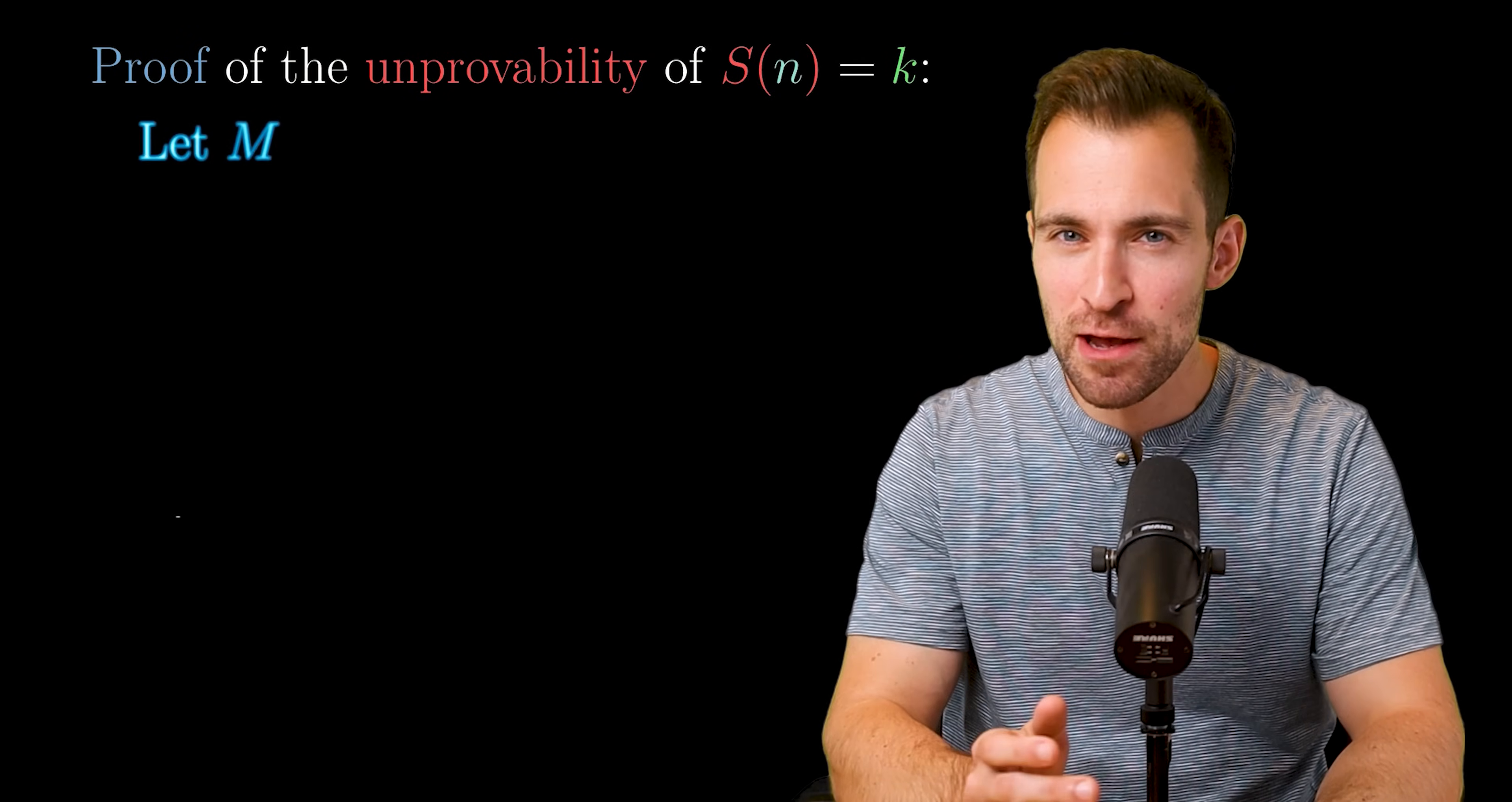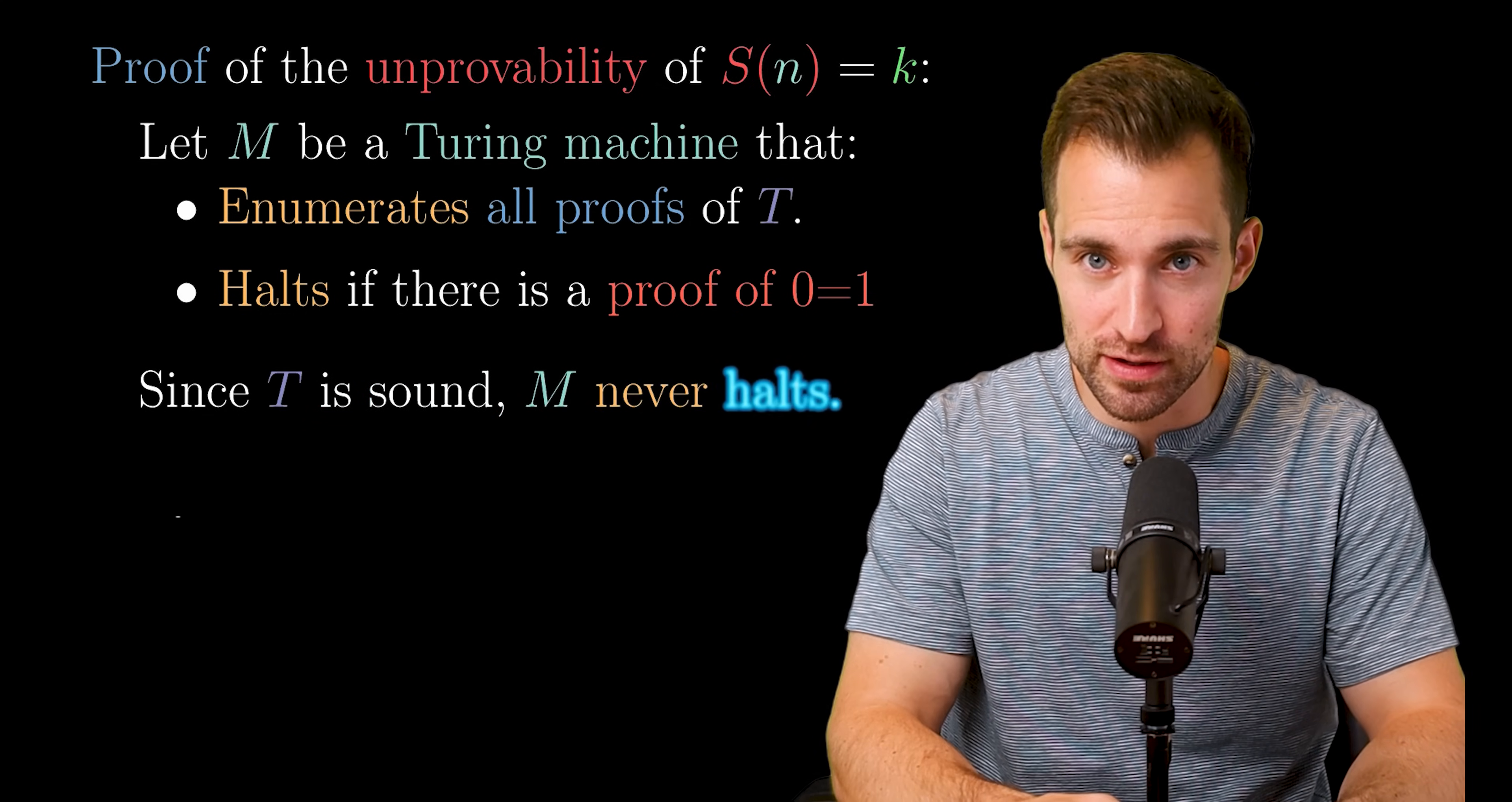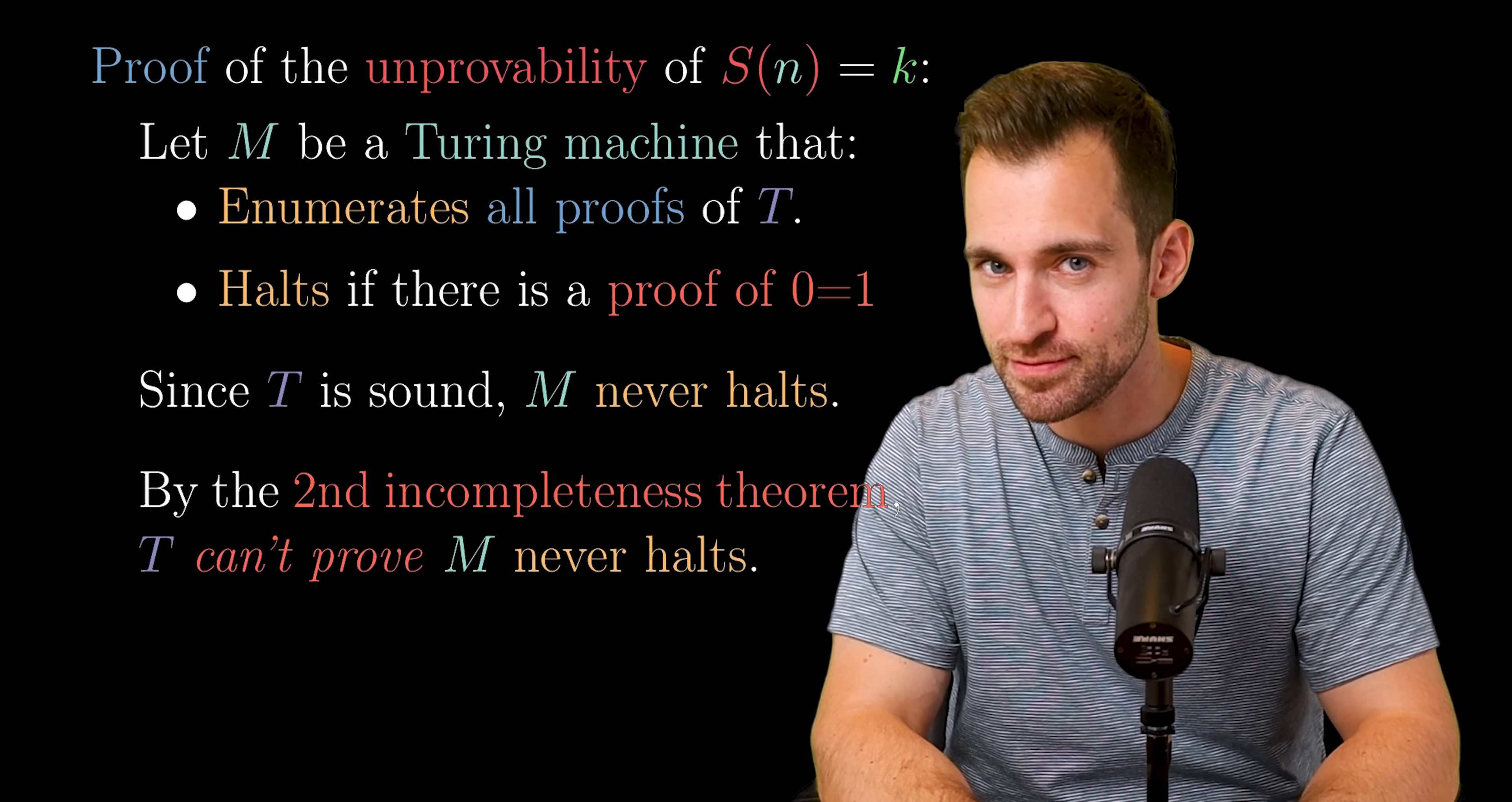Now here's the proof. Let M be a Turing machine that enumerates all possible proofs of T when started on the all zeros tape and halts if there is a proof of 0 equals 1, a contradiction. Now, since T is sound, that means it's consistent and so won't produce such a contradiction. And so M never halts. And by the second incompleteness theorem, T can't prove M never halts. So there we have it. It's machines like M that are inscrutable to our mathematics. And this helps my intuitions. I accept that an axiomatic system can't yield a proof regarding the computation of all possible proofs. Yes, I can imagine that breaking the rules of logic.